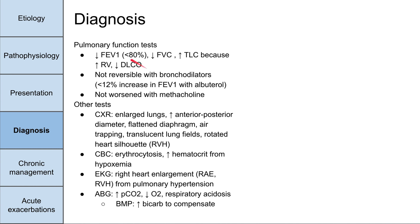It's important to note that pulmonary function test deficits are not reversible with bronchodilators — if they were, you'd suspect asthma. The threshold cited is that at least a 12% increase in FEV1 with albuterol suggests asthma. If you have a non-reversible decrease in FEV1 with less than a 12% increase with albuterol, you suspect COPD.